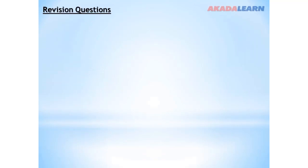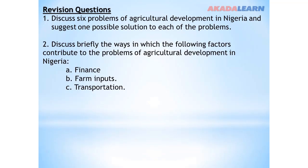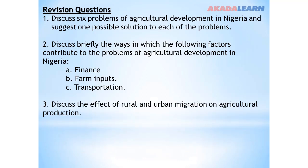Revision questions: Question one — Discuss six problems of agricultural development in Nigeria and suggest one possible solution to each. Question two — Discuss briefly the ways in which Finance, Farm Inputs, and Transportation contribute to the problems of agricultural development in Nigeria. Question three — Discuss the effect of rural-urban migration on agricultural production. If you find it difficult to answer these revision questions, go over the video again. Thank you for being on this platform. Have a great day.